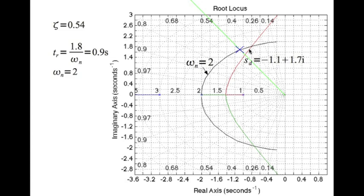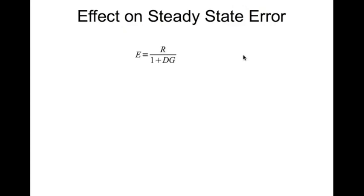As you can see, the original root locus doesn't pass through this point. So no matter how much you change the proportional gain k, you'll never reach this closed-loop location. That's why you need to bend the root locus — that's the focus of the lead controller design.